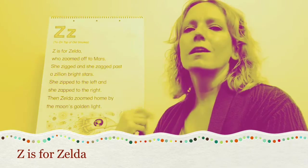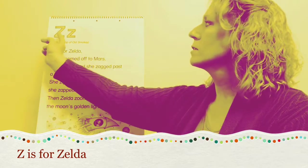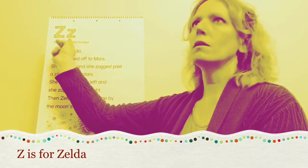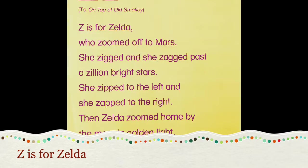Some of our friends liked the letter Z song. This is an uppercase Z and a lowercase Z. This song is sung to the tune of On Top of Old Smokey. Are you ready? Z is for Zelda who zoomed off to Mars. She zigged and she zagged past a zillion bright stars. She zipped to the left and she zapped to the right. Then Zelda zoomed home by the moon's golden light.